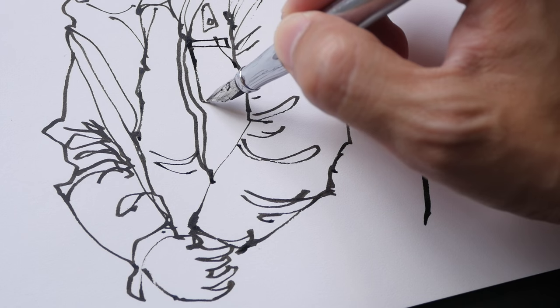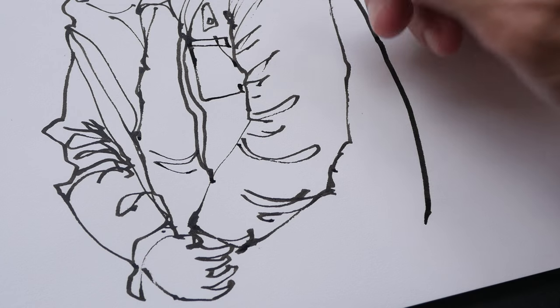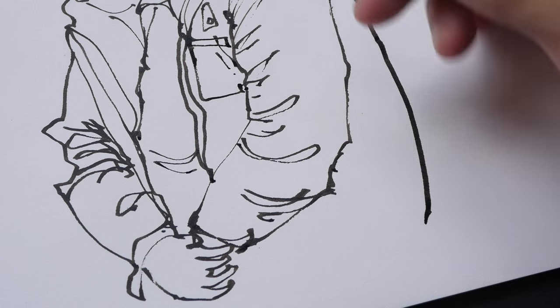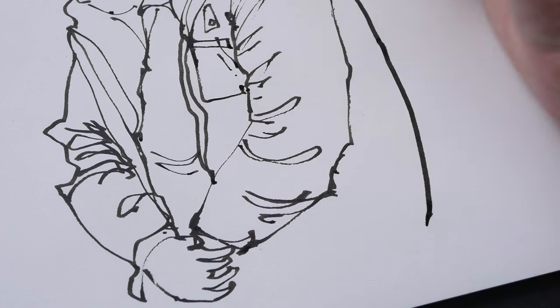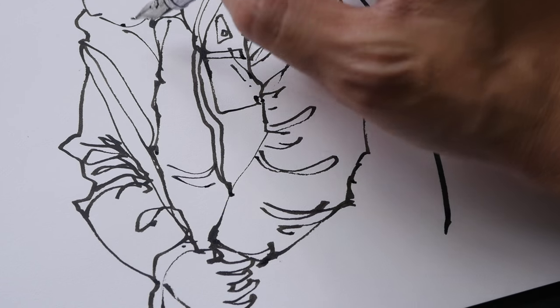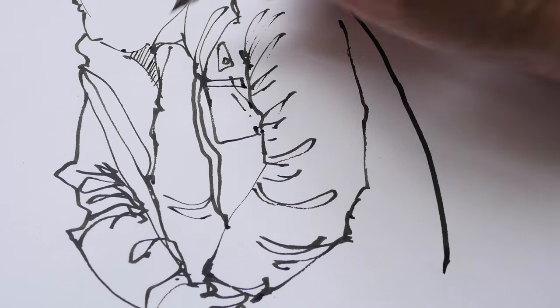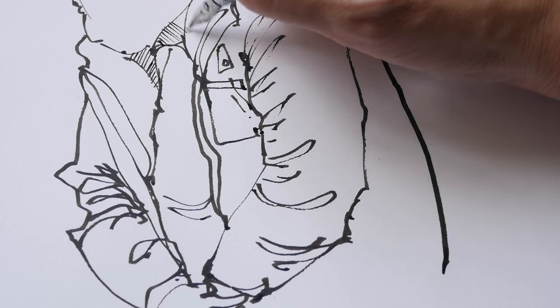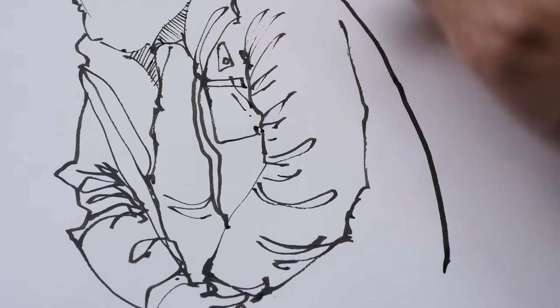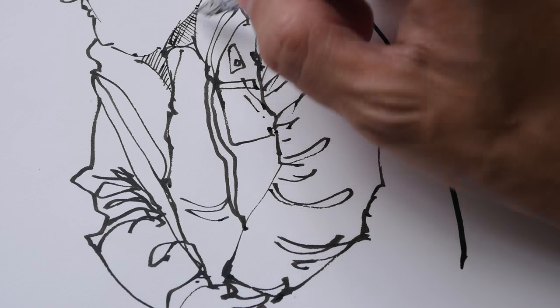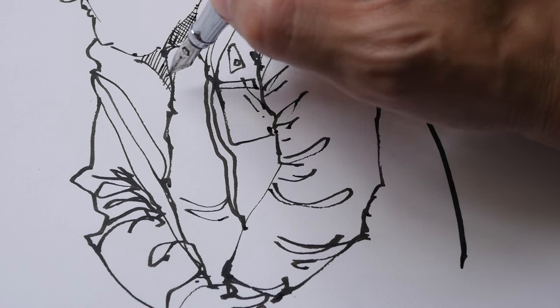Let me draw the pocket of this guy. Okay, let's do some hatching. This pen is quite good for hatching as well. You just tilt the pen upwards and you can hatch—it's quite easy.